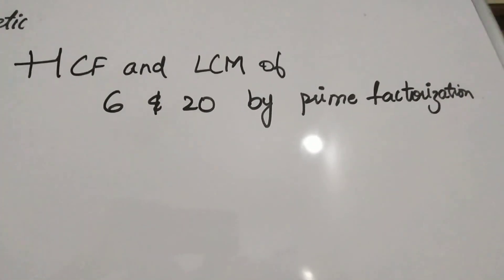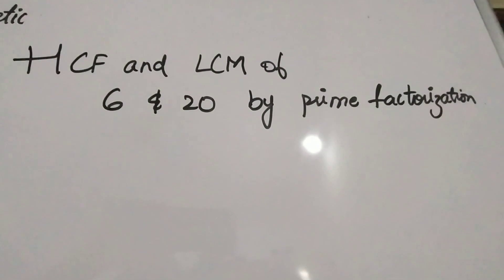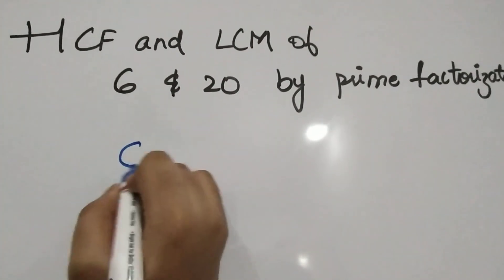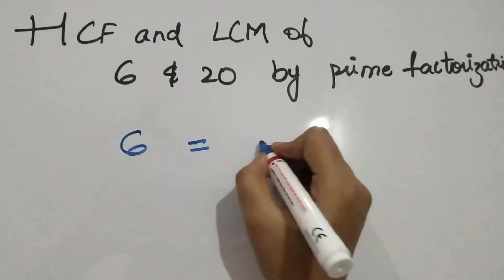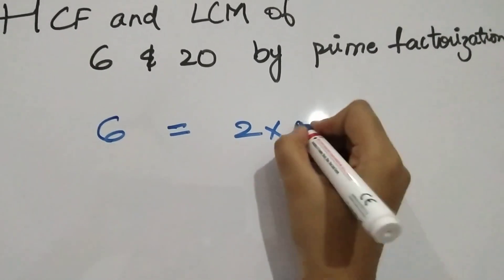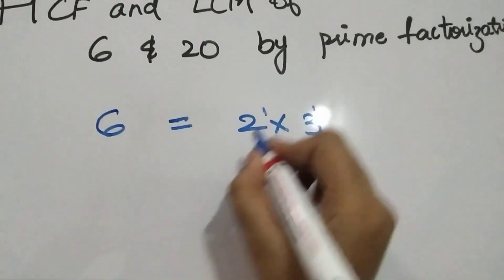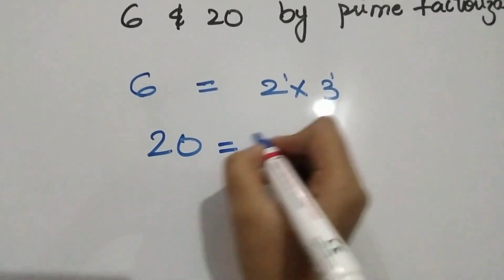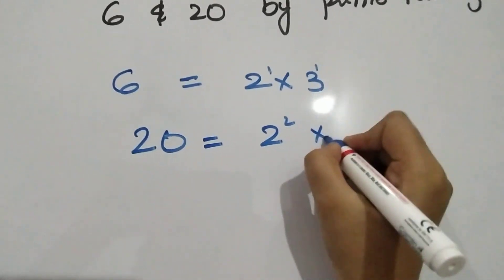Let us see the HCF and LCM of 6 and 20 by prime factorization method. So 6 we can write it as 2 into 3. 20 we can write it as 2 square into 5.